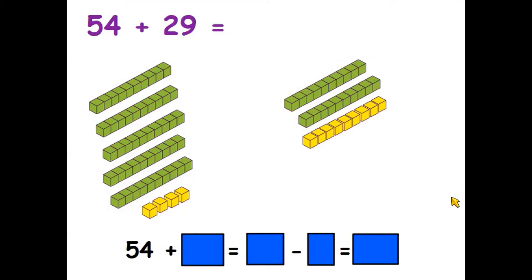So we're going to work out the answer to 54 add 29, but we're going to use estimation to help us so we can do it easily in our heads. We will have to do a little bit of adjustment at the end, so watch closely. This is 54 add 29 — so I've got 54, and I'm going to add 29.